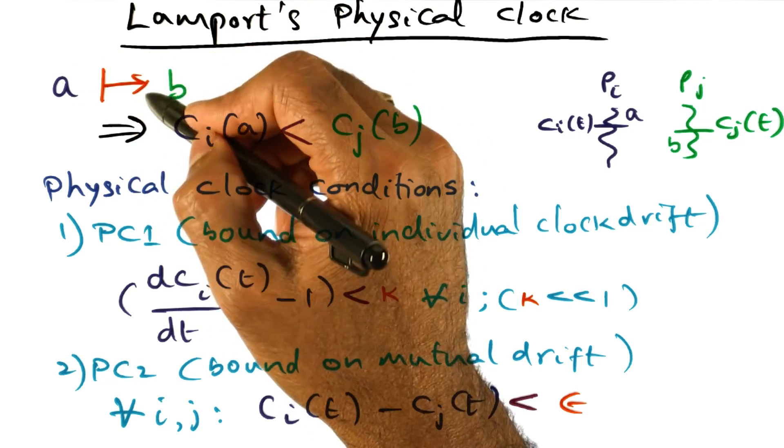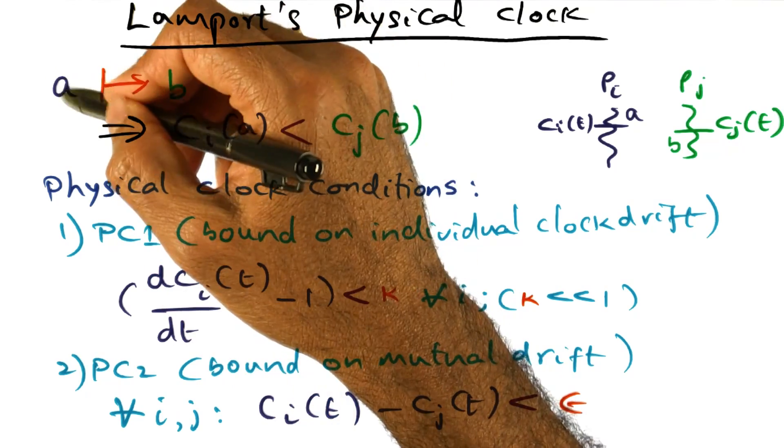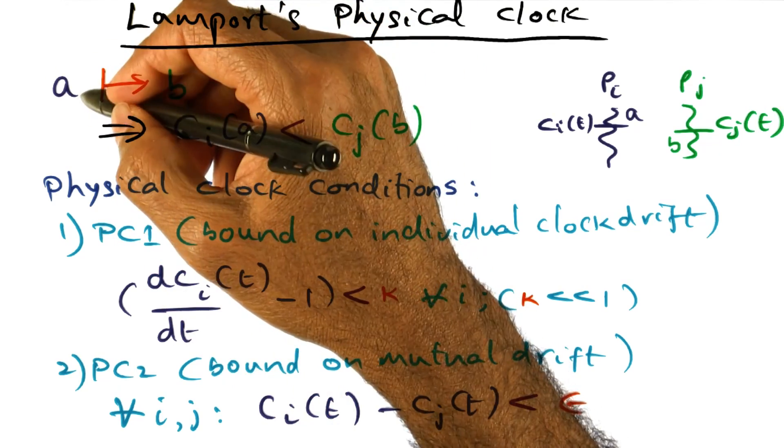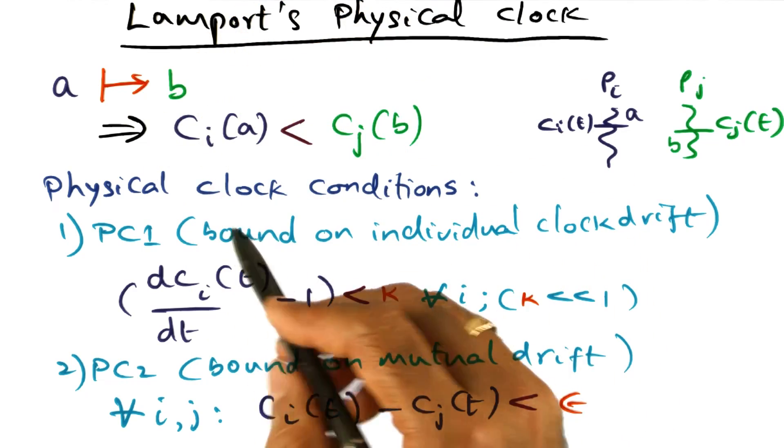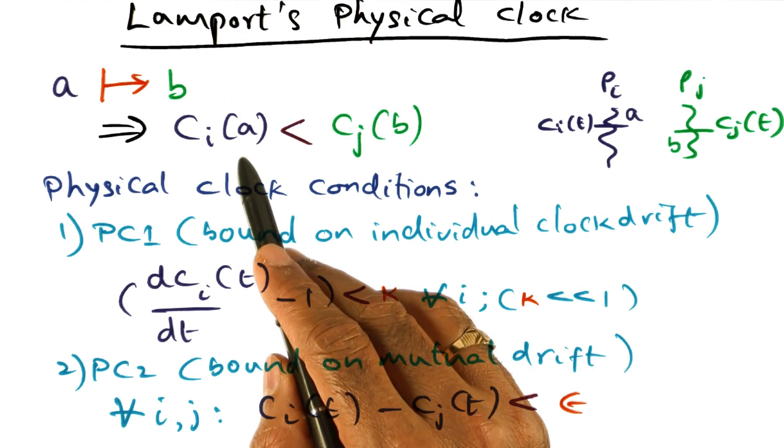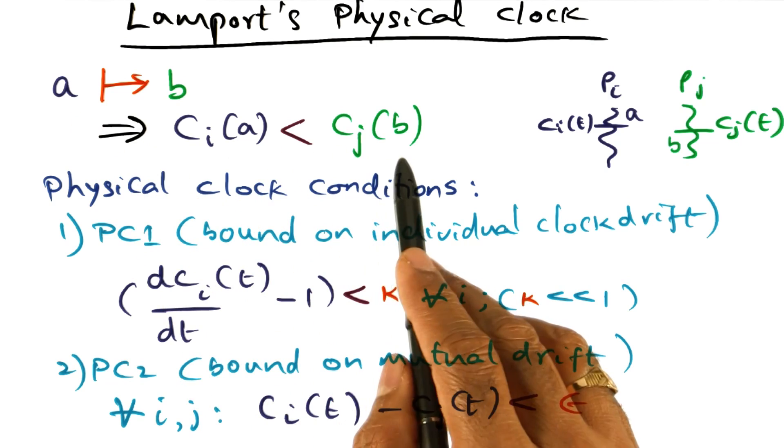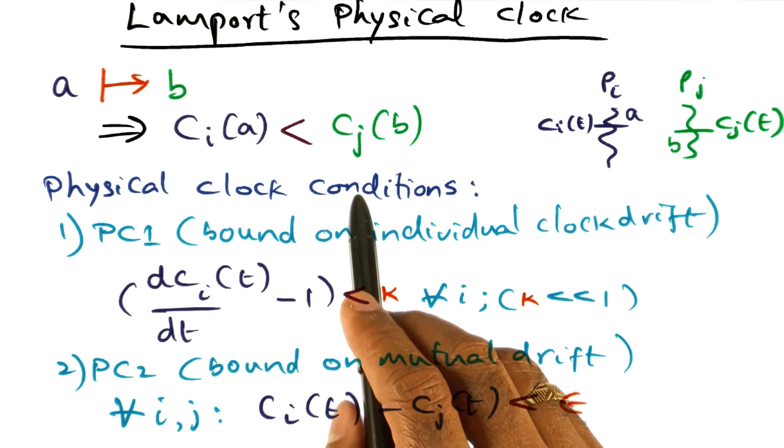So A in real time happened before B. That is how you have to read this notation that in real time, the event A happened before B. And in order to satisfy that, the condition is the time stamp associated with A has to be less than the time stamp associated with B.